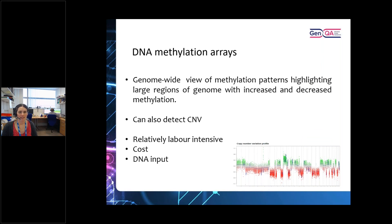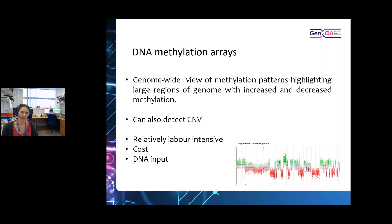Another option is DNA methylation arrays. These give a more genome-wide view and look at methylation patterns. Methylation is becoming increasingly important in genomics and understanding how disease, treatment patterns, and molecular pathology assays work and respond to different treatments. You can look at large regions of the genome, the balance of methylation — whether increased or decreased — and also look at larger structural changes and copy number variation. However, these arrays can be relatively labour intensive and are generally on the higher end of the cost scale, and they need a relatively higher DNA input to get good results.